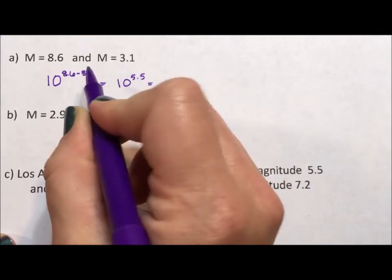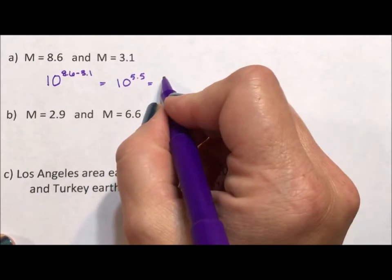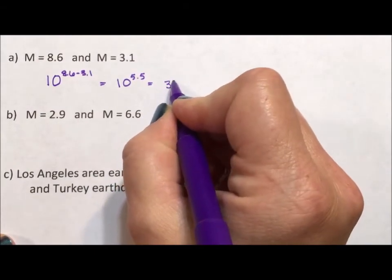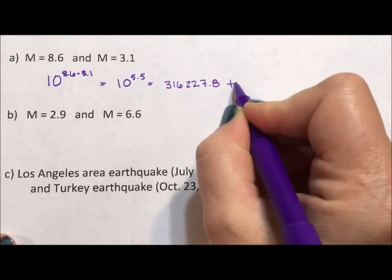And so the 8.6, sorry, the 3.1 we compare the second to the first, the 3.1 is 316,227.8 times weaker.